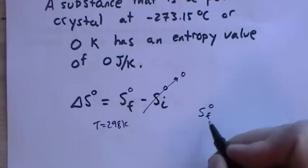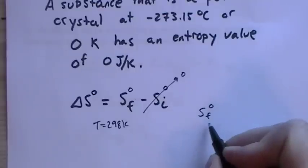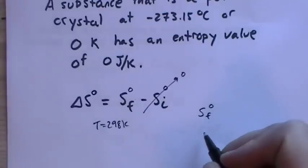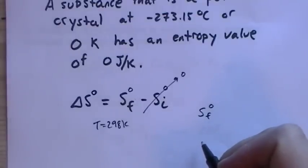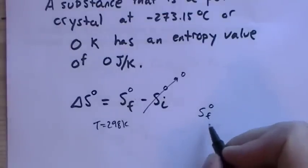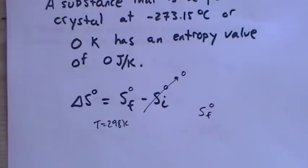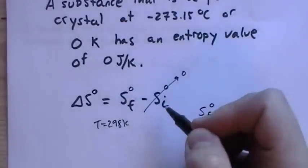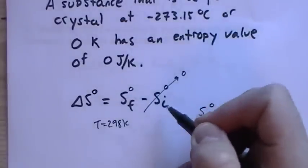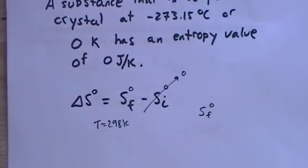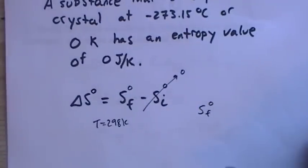The superscript degree sign with 'f' stands for formation rather than final, but it means the same thing: we have only one value rather than a change, because the starting entropy at zero Kelvin is always zero. This simplifies things for us.